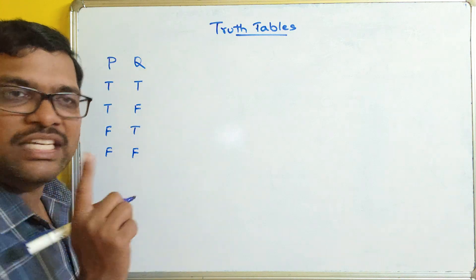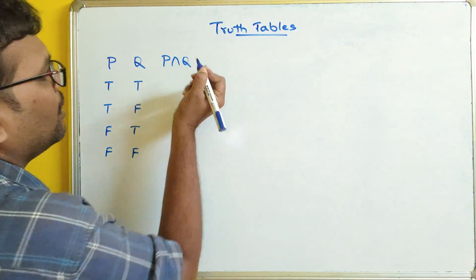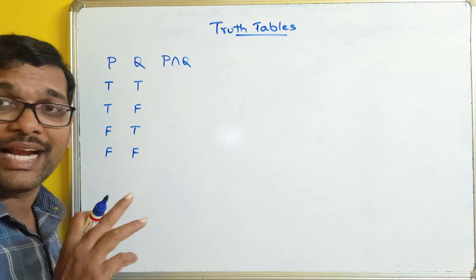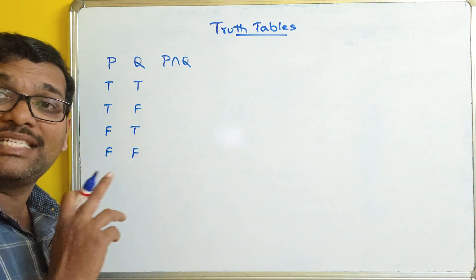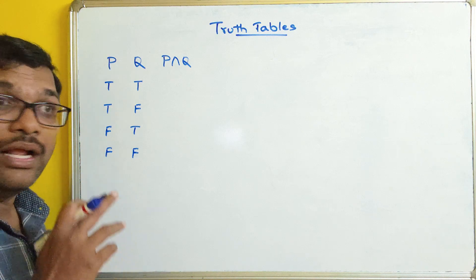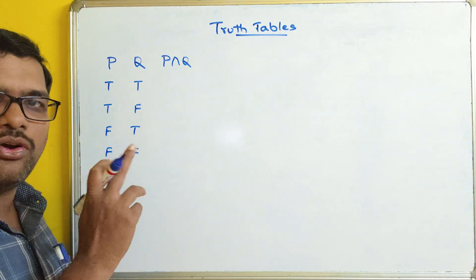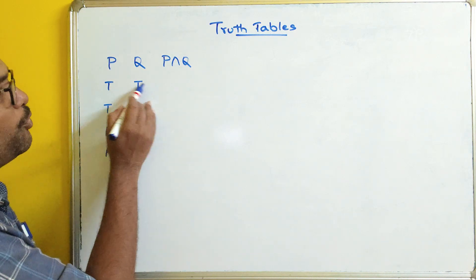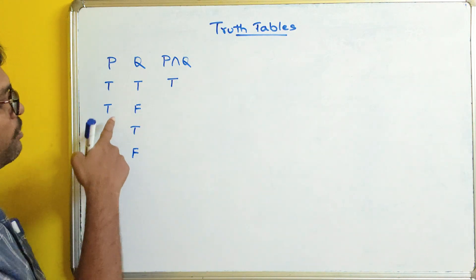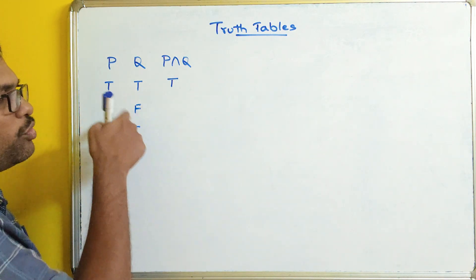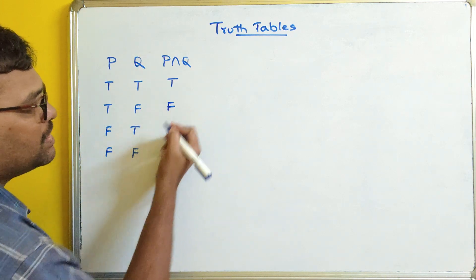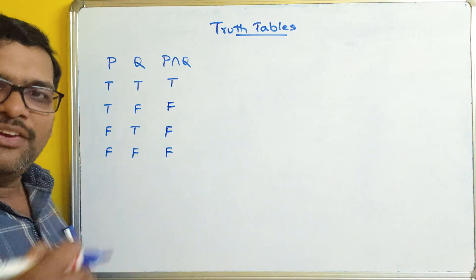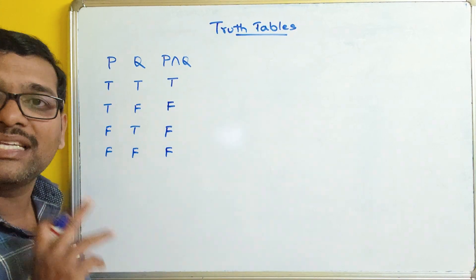Coming to the first connective — conjunction. Conjunction means if both results are true, then only the result will be true. If the truth value of any one of the propositions is false, the result will be false. So: true and true gives true; true and false gives false; false and true gives false; false and false gives false.